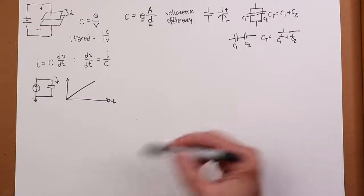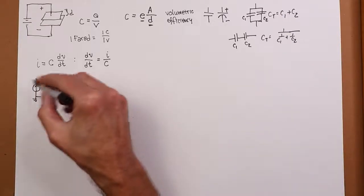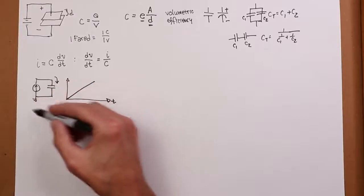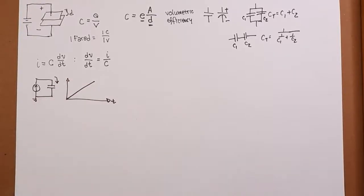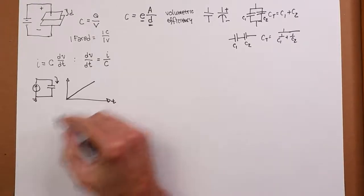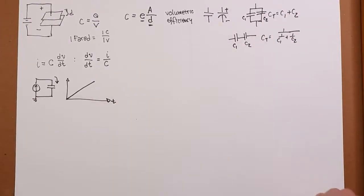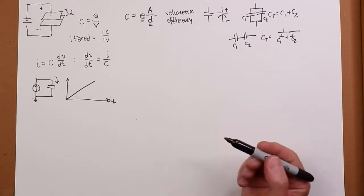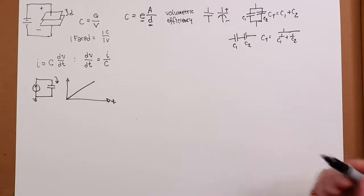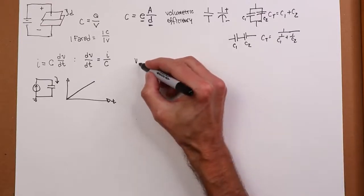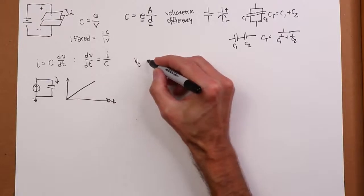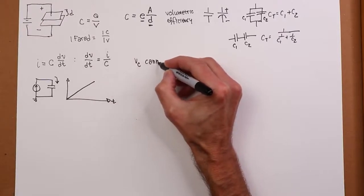In the real world, eventually you're going to run out of steam over here. This current source is going to be unable to produce the kind of voltage that we need. But for our idealization this thing just goes forever. The second thing this tells you is that the voltage across the capacitor cannot change instantaneously. That's a huge thing. VC, voltage across the cap, cannot change instantaneously.